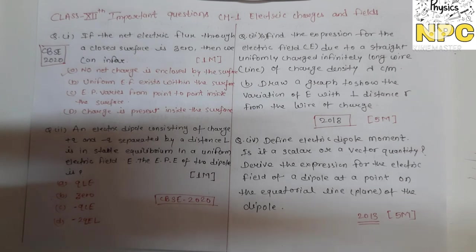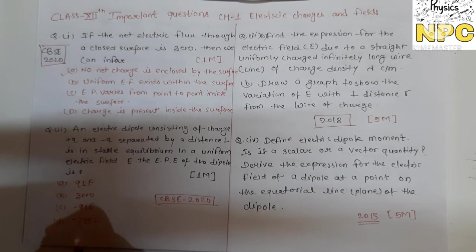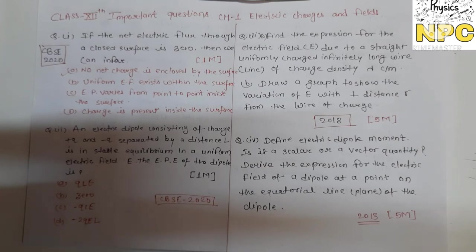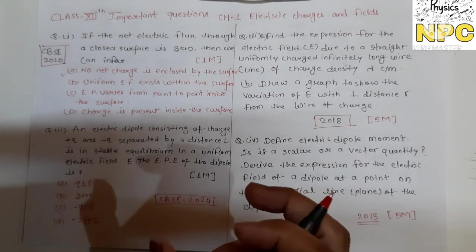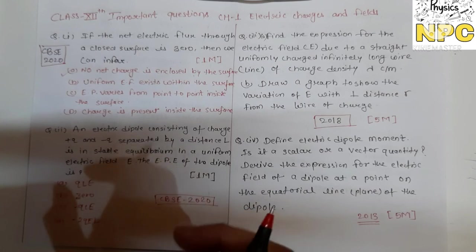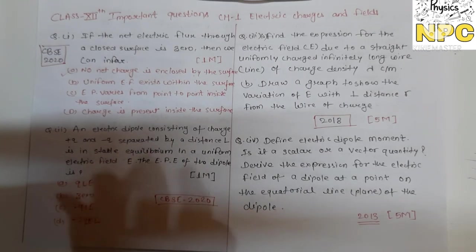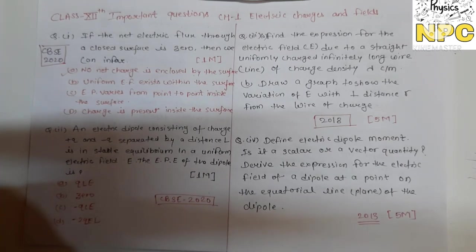Question number three is differentiated by A and B. Find the expression for the electric field due to a straight uniform infinitely long wire — we had proved the derivation for this. The result we obtained for the long straight wire is that electric field intensity depends on r: E is inversely proportional to r.